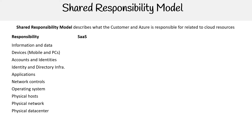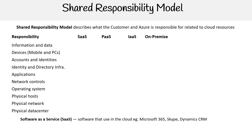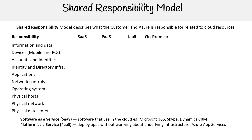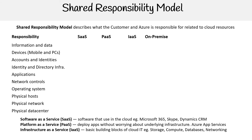We have SaaS, PaaS, IaaS, and on-premise. Software as a service is software you use in the cloud — think Microsoft 365: Word, Excel, Skype, OneDrive, SharePoint, Dynamics CRM. Platform as a service lets you deploy apps without worrying about the underlying infrastructure, like Azure App Services — you just put your app up and it works. Infrastructure as a service covers the basic building blocks of cloud IT: storage, compute, databases, networking — I call that the core four. On-premise means the data center is owned, operated, and maintained by the customer.